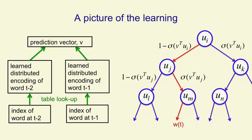So that will be nodes i, j, and m in this tree. That red path shows you the path to the word that actually occurred next. And those are the only nodes we need to consider during learning.